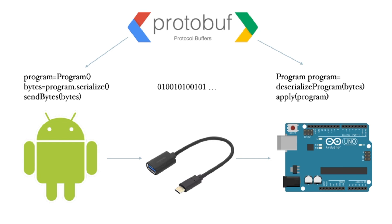In the Arduino board we use the bytes received to create and apply the program. The program on the Android side and the program on the Arduino side have the same data structures but in different languages — one is in Kotlin, the other in C.